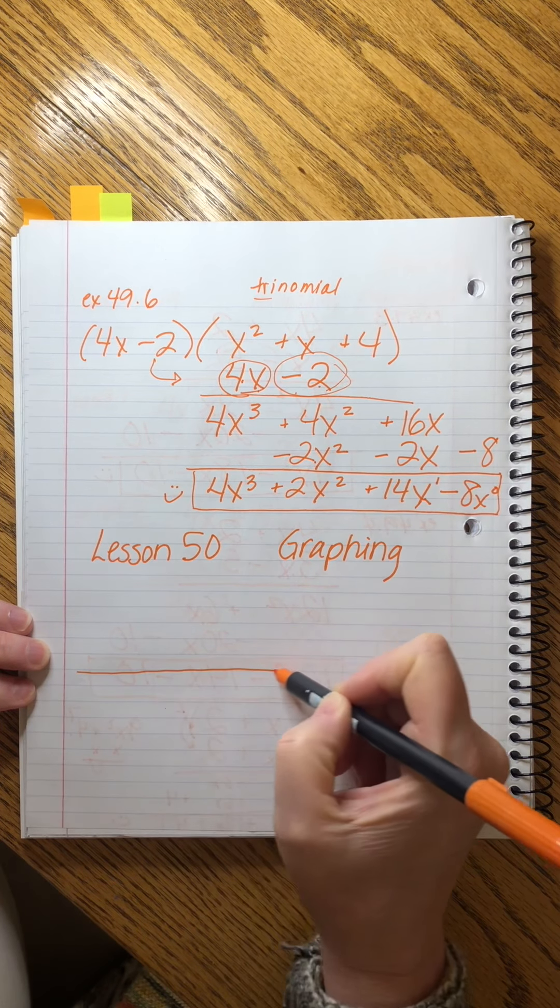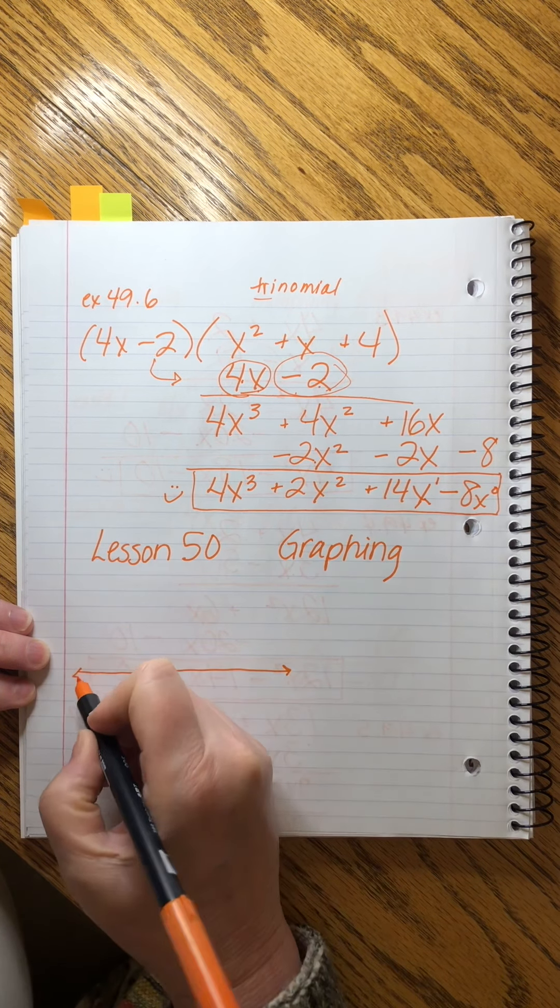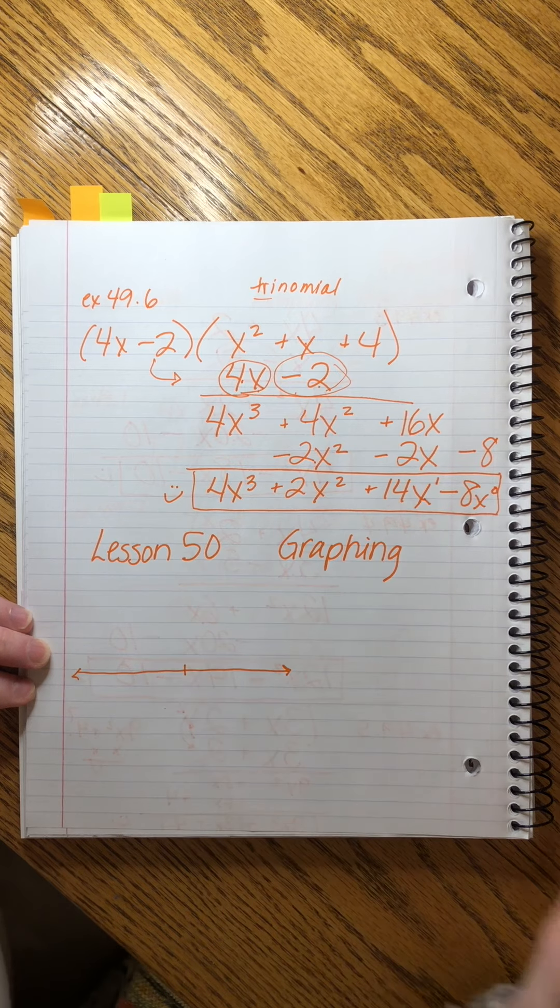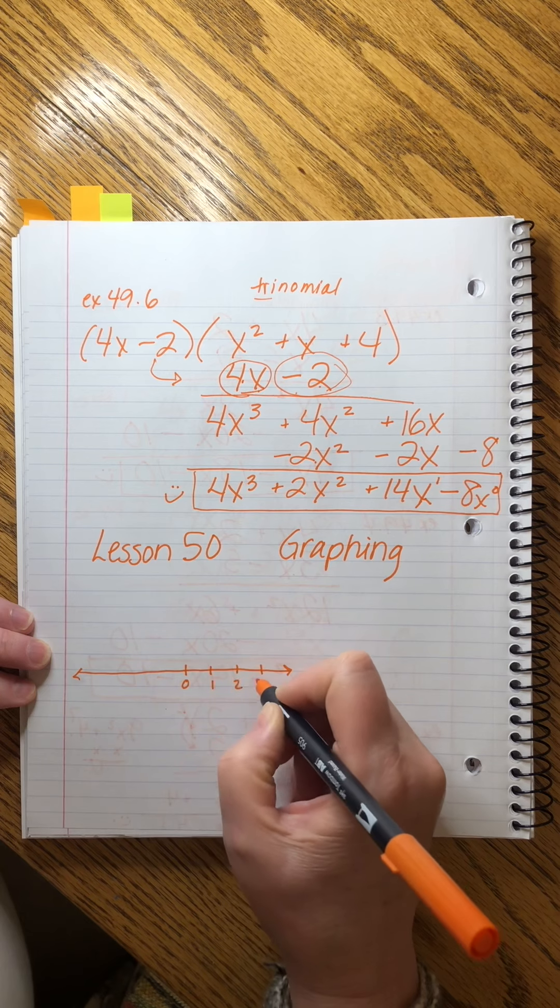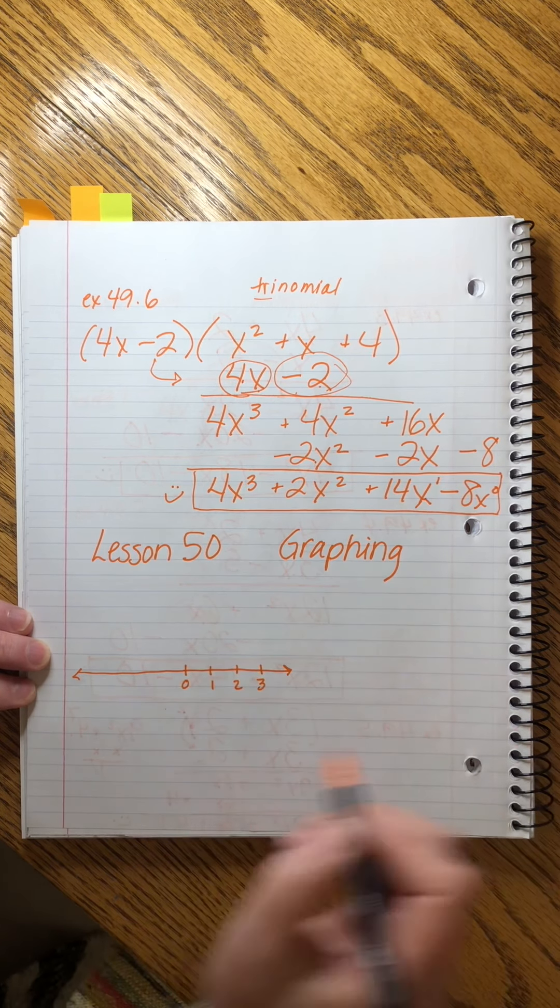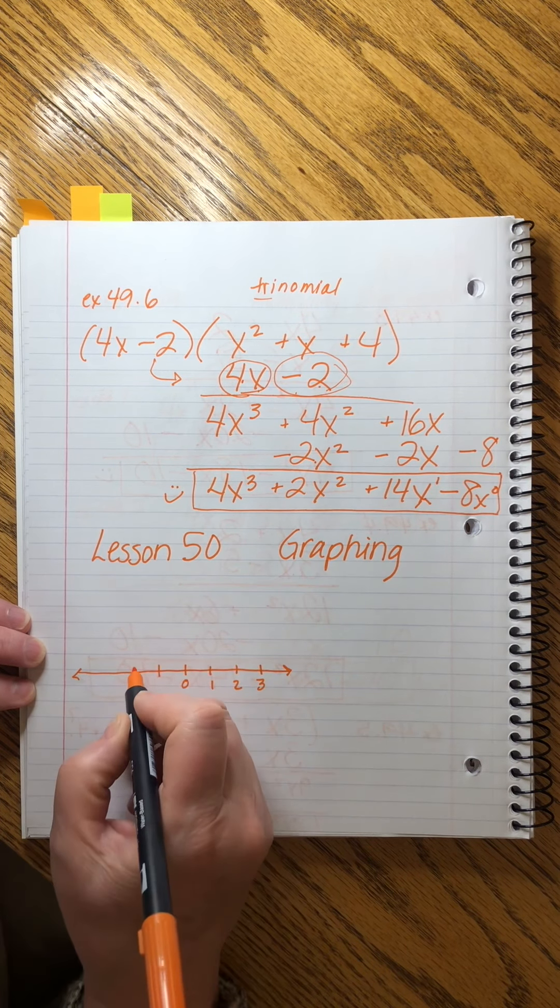This is a number line. You've seen it a hundred times. We can write them however we want, but this one I'm going to start at zero, and I'm just going to put a few positive numbers in here. It keeps going infinitely, and then I'm going to put a few negatives over here.